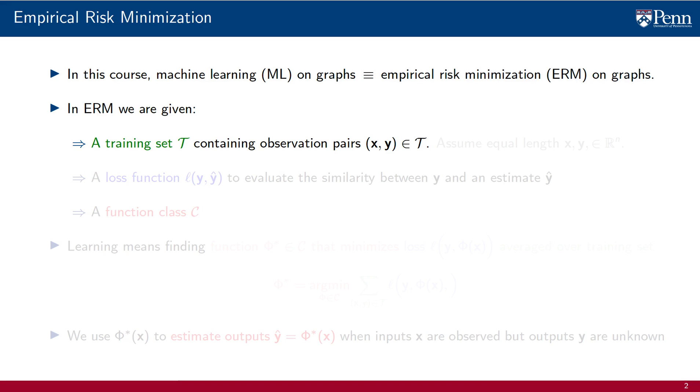The first element is a training set T containing observation pairs of the form (x, y), where x is an input or feature and y is an output associated with x, which today and in the next few lectures we are assuming are both of the same length n, the number of nodes in the graph.